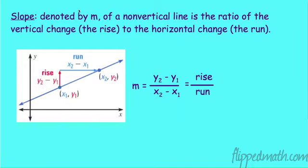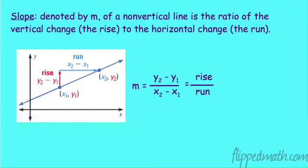Slope is denoted by the letter M. A non-vertical line's slope is the ratio of the vertical change — the rise — to the horizontal change — the run. If I have two points, it's how much it goes up (the rise, or difference in my two vertical components) over the run (the difference between my two x's). The formula is y2 minus y1 over x2 minus x1. It's rise over run.